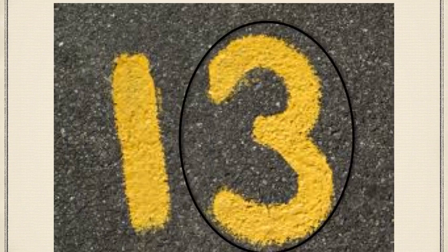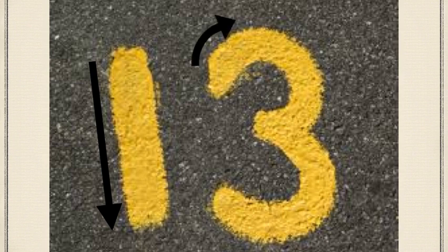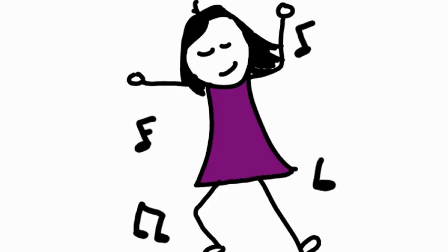When you write numeral 13, first you write a straight line going down. This is for the one. Then you go around, stop, and around again, and this is for the three. Awesome job.